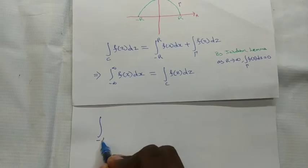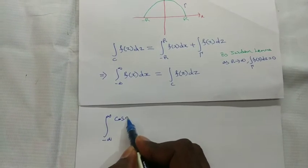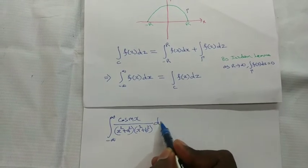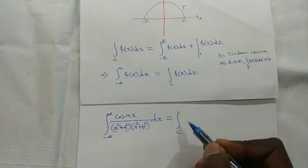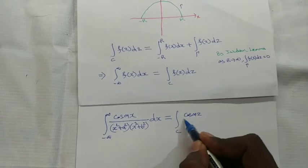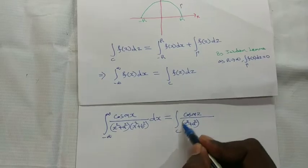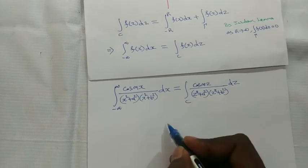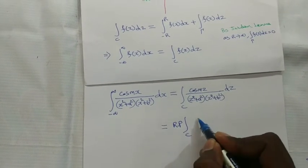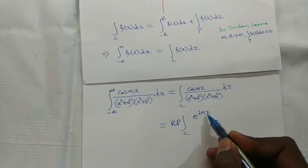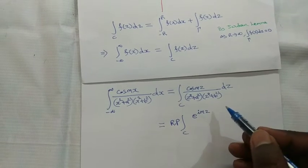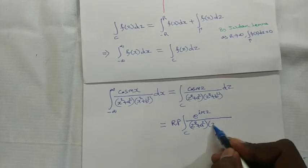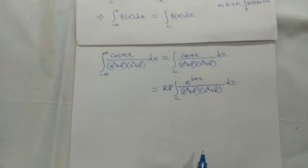The integral from minus infinity to plus infinity of cos(mx) divided by (z² + a²)(z² + b²) dz is set up. Now, cos(mz) can be written as the real part of e^(imz), because e^(imz) = cos(mz) + i·sin(mz), and cos(mz) is the real part.